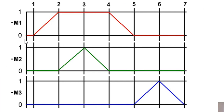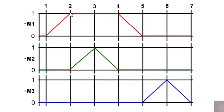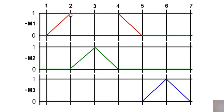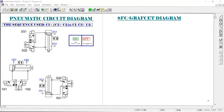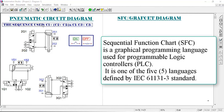This is the sequence of operations — how they go from 0 to 1, then to 2. The first cylinder extends to clamp, then the second cylinder goes for stamping and immediately returns back. After returning, cylinder one goes back to initial position, and finally cylinder three goes for ejecting the workpiece from the system. This is the full sequence.